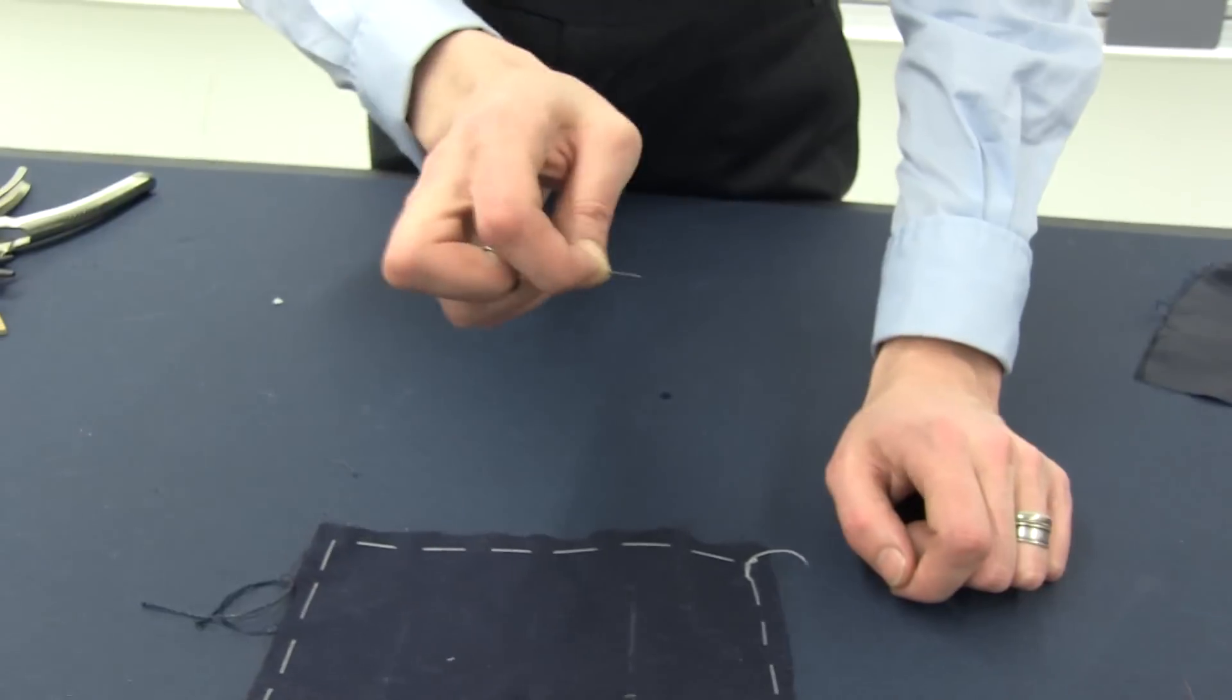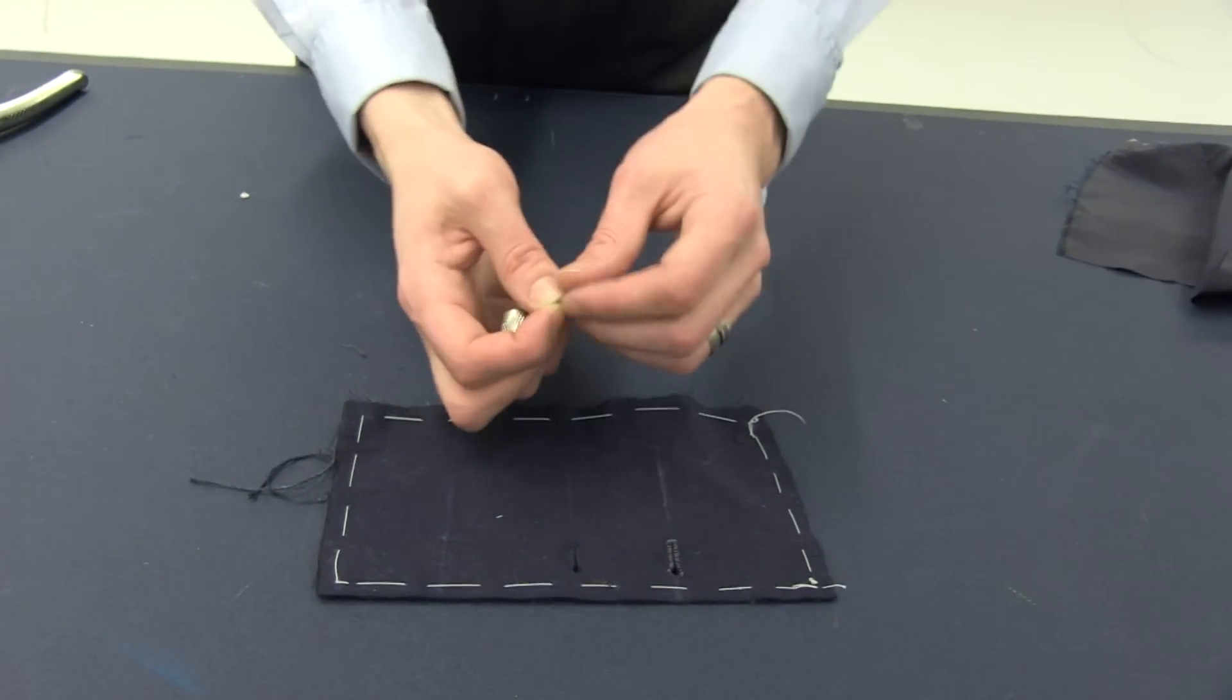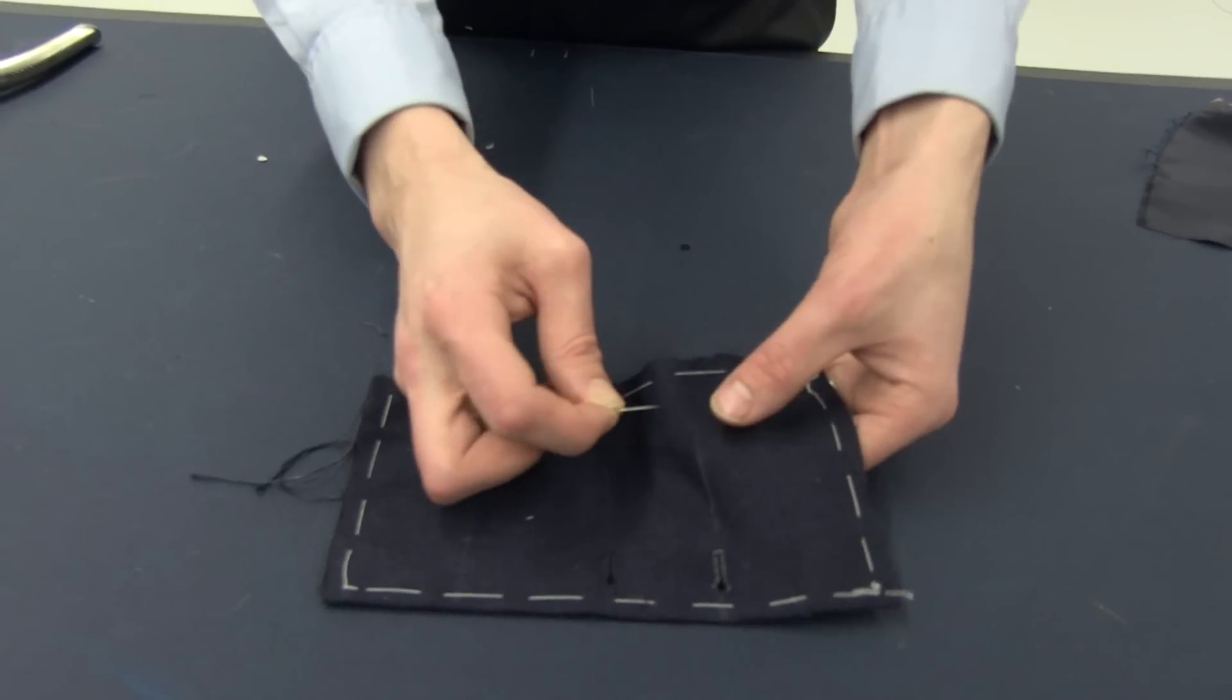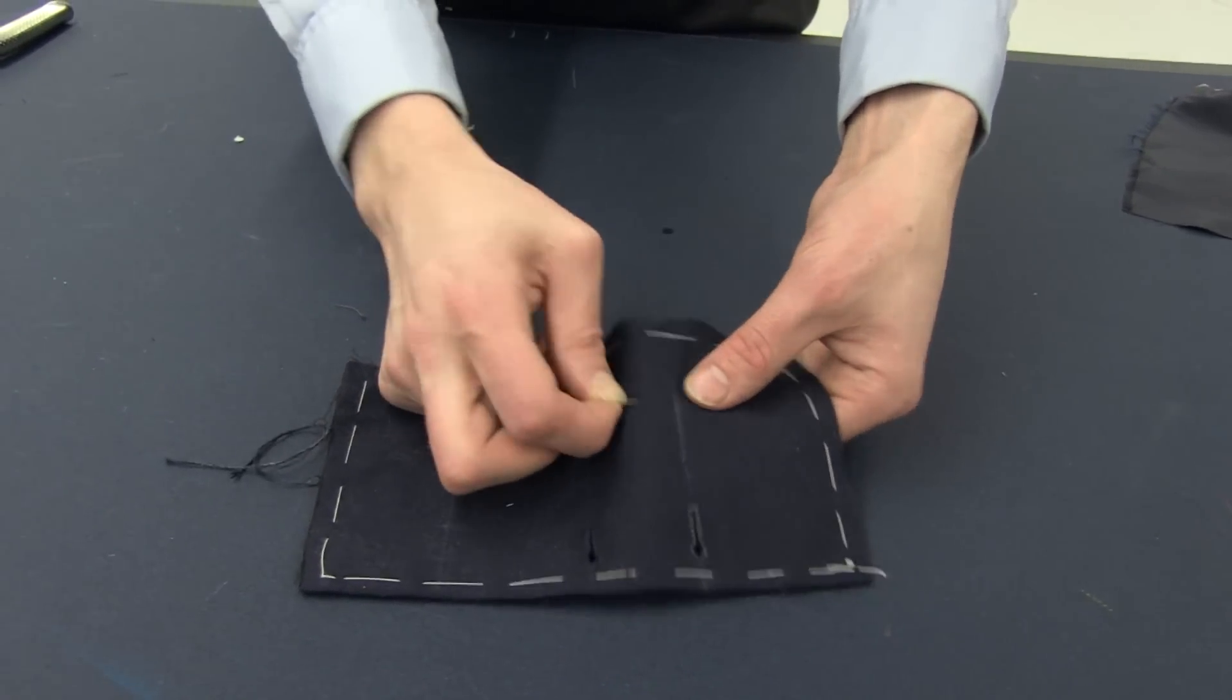You try to push it with the front of the thimble rather than the side, because your finger goes forward rather than from side to side, pulling it behind and pushing it.